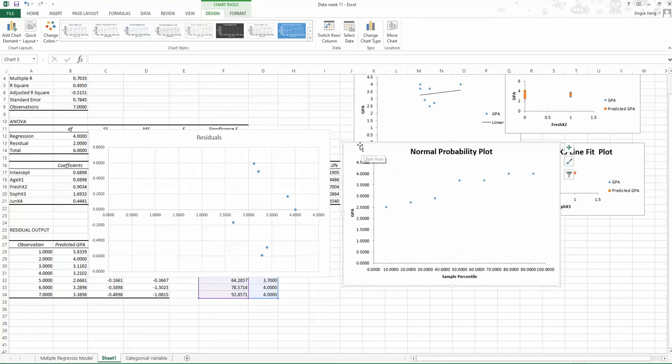However, by looking at this diagram, you should have some idea. You might think the assumption is valid because the points seem to be in a straight line. The key is to remember all your assumption criteria. If the normality assumption is not violated, you are supposed to see the dots line up in a straight line.